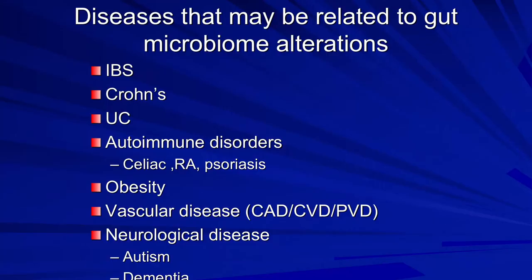This is a very partial list of disease states related to changes or alterations in our gut microbiome — things that we've known about for a long time, like Crohn's disease or irritable bowel, but also things that maybe we didn't used to think were connected to the gut, like rheumatoid arthritis, obesity, maybe even vascular disease and certain neurological disorders.